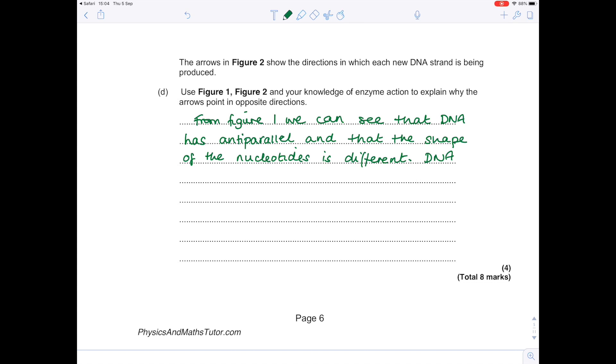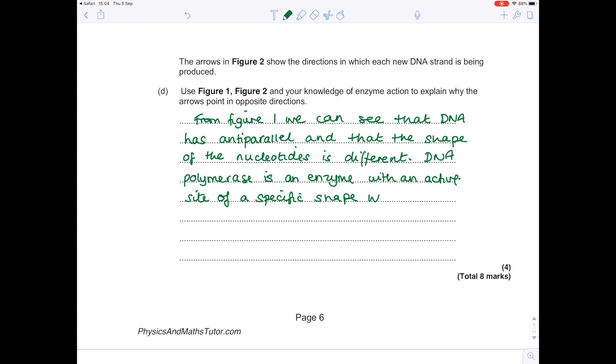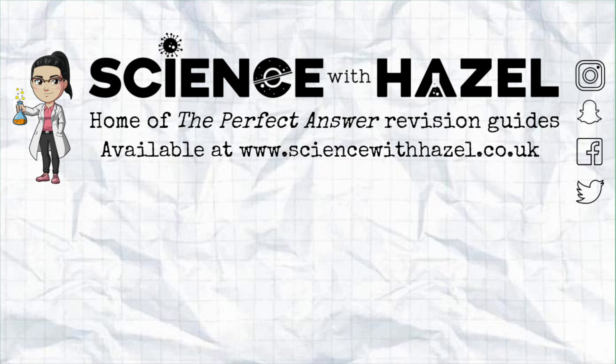Because DNA polymerase is an enzyme, it has a very specific active site which can only bind to substrates of a specific complementary shape. Thank you.